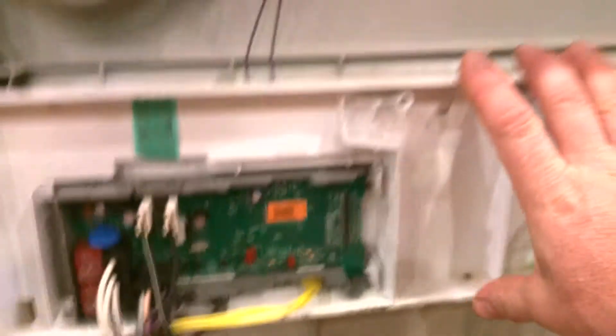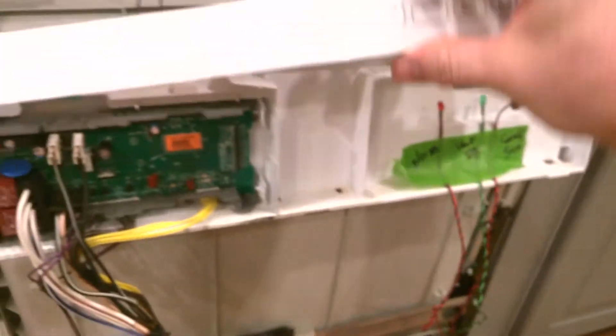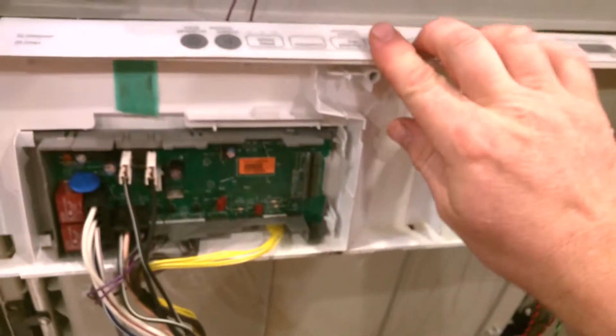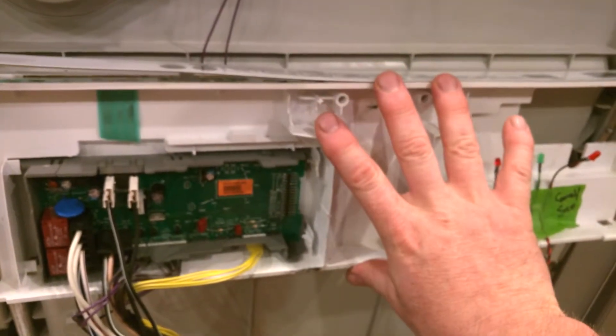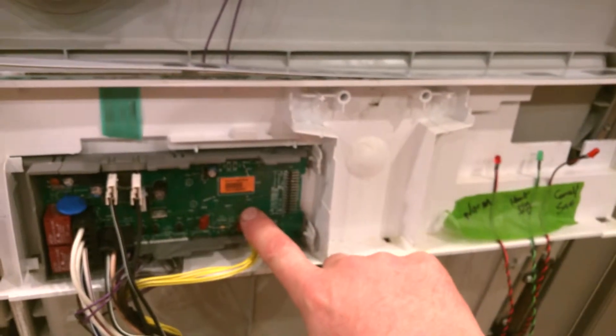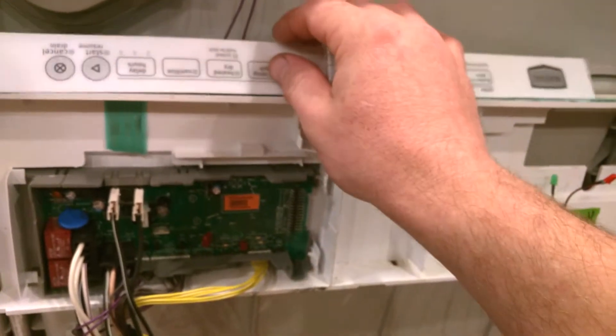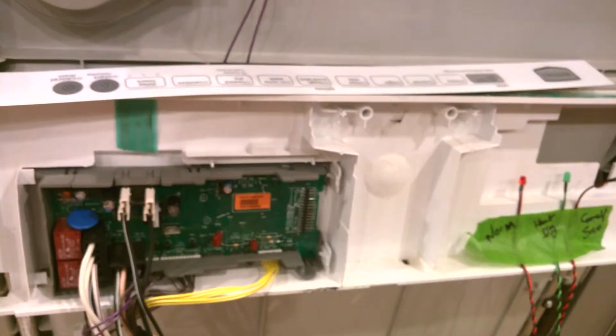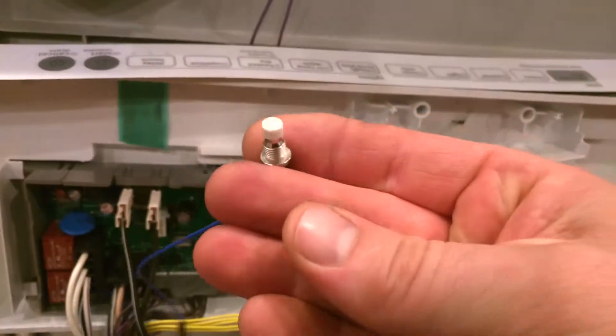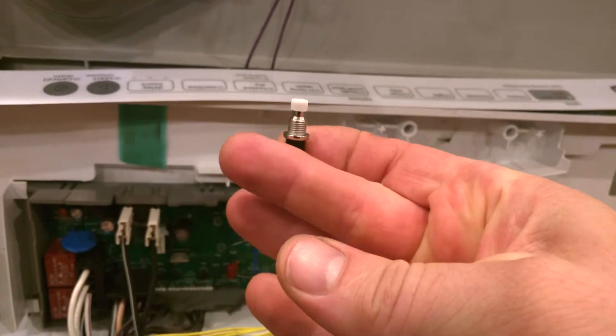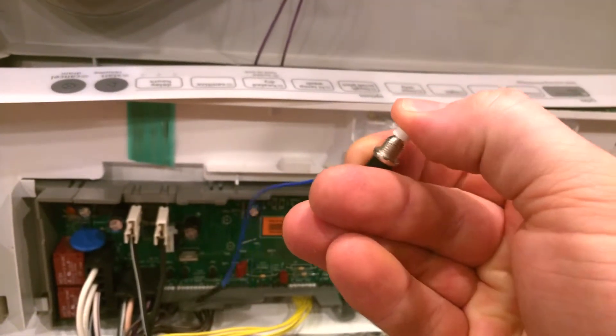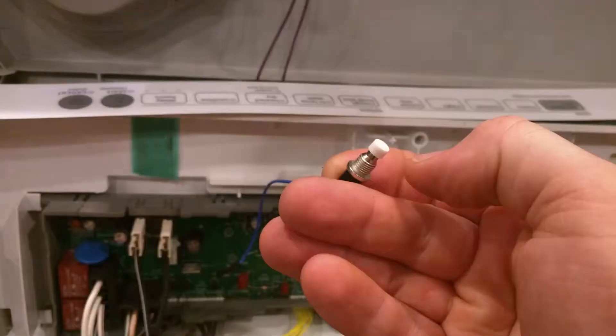This plastic control pad that has the buttons to select the cycle and such—this whole set minus the control board is $150. So you're basically paying $150 for these pushbutton switches. We're going to replace those with some momentary normally open pushbuttons from Amazon. Link in the description.